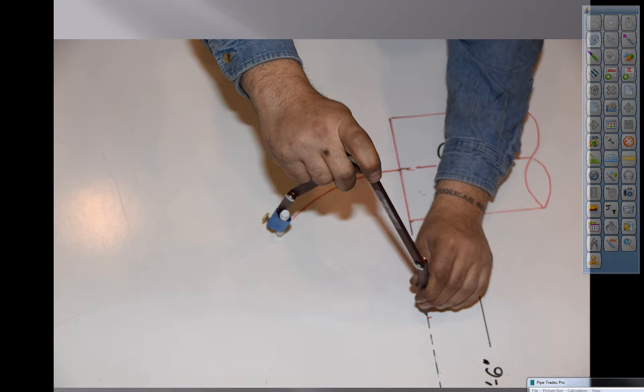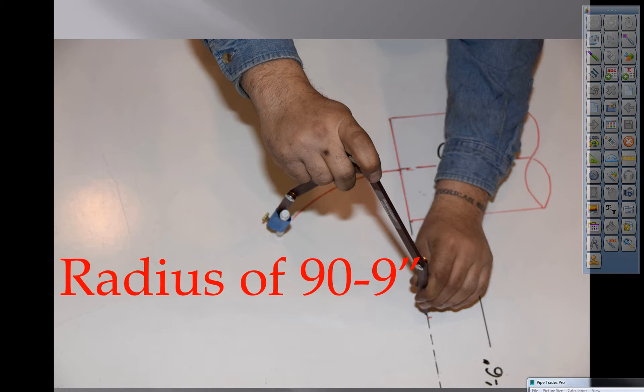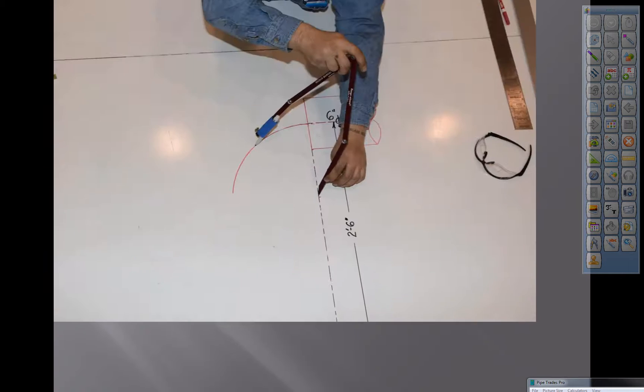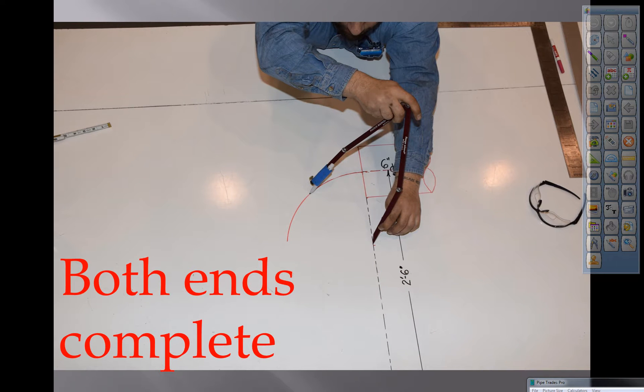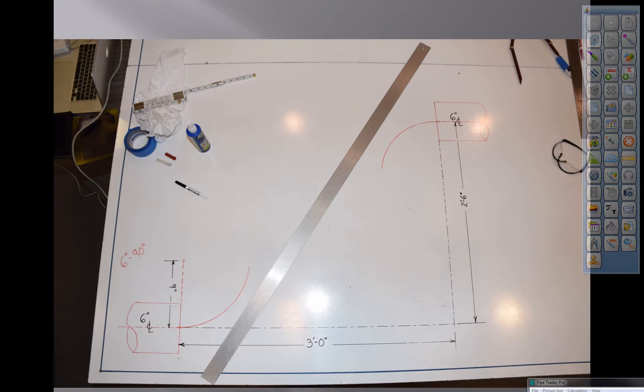This is basically drawing to scale. There you can see the end result. You've drawn that twice now. Both ends are complete. There's your end result.